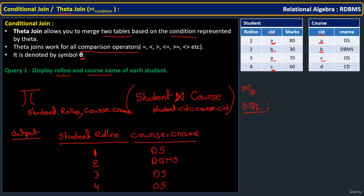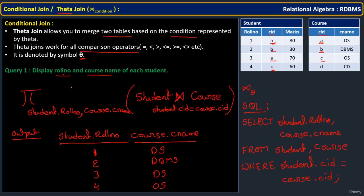The equivalent SQL is very simple: SELECT student.roll_number, course.c_name FROM student, course WHERE student.c_id = course.c_id. From the Student and Course tables a Cartesian product is formed, but only the rows satisfying the condition are returned. The result is the same as the relational algebra expression.